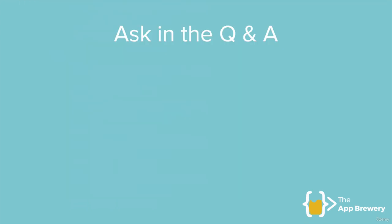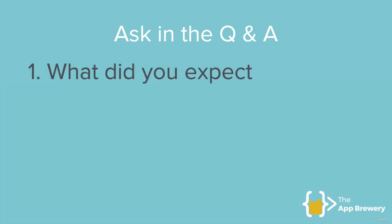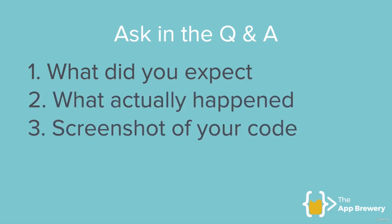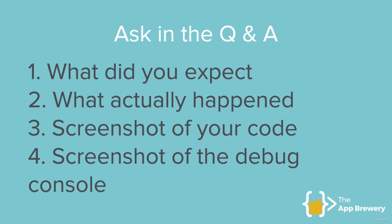When you're asking questions in the Q&A, the way to get the most helpful responses and solutions is by following a four-step approach. Firstly, tell us what did you expect to happen. Then, what actually happened. Then include a screenshot of all of your code that corresponds to this situation, and then include a screenshot of the debug console that includes any errors, if there were any errors or if your app has crashed.